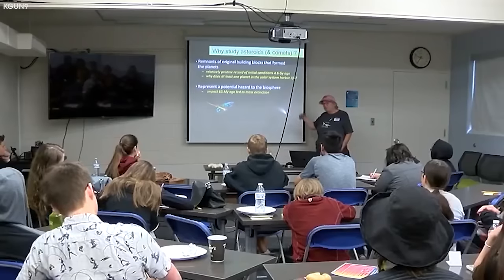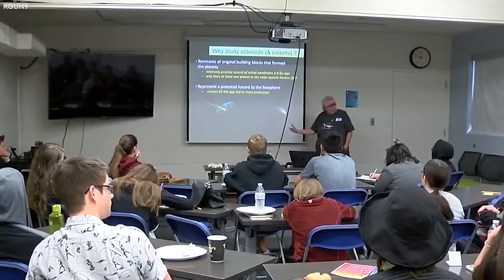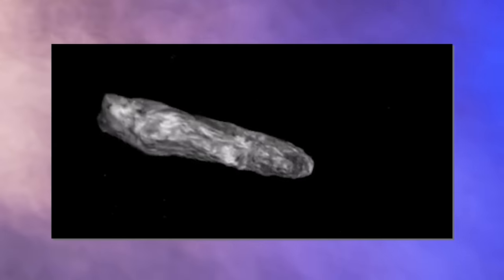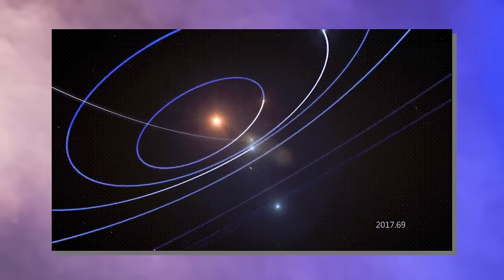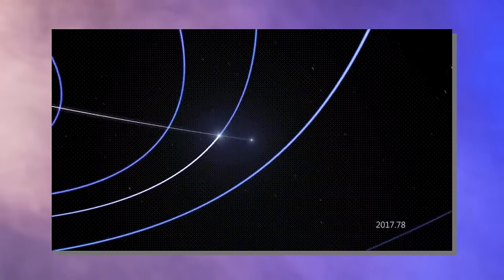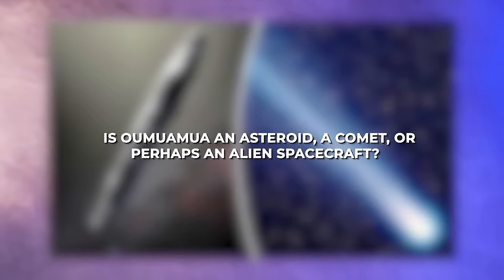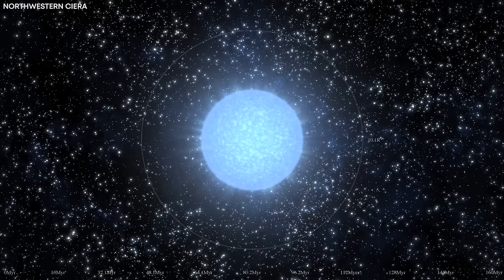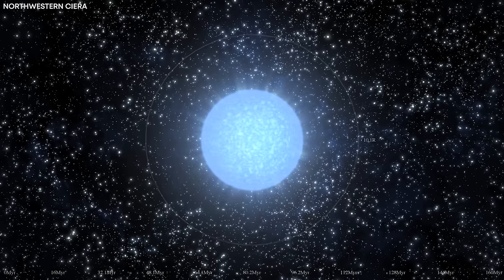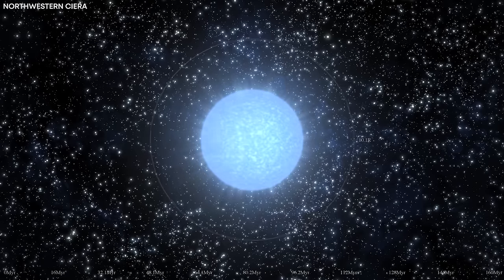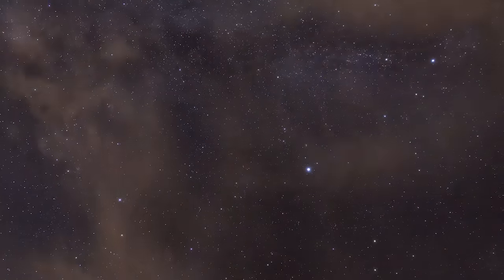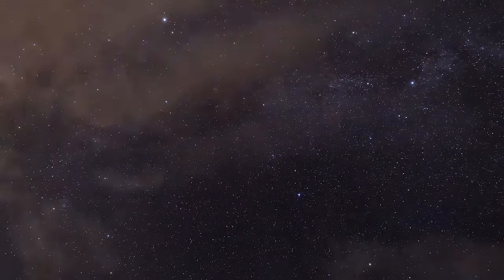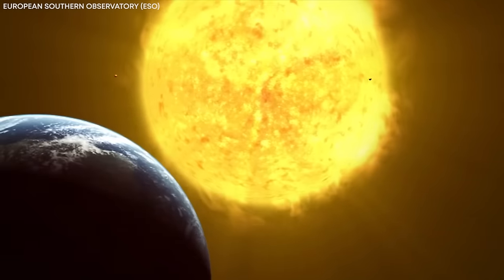Let's delve into the ongoing debate among astronomers and scientists. With some leaning towards Oumuamua being an interstellar comet, while others argue for it being an interstellar asteroid. So, is Oumuamua an asteroid, a comet, or perhaps an alien spacecraft? Let's examine the arguments regarding Oumuamua's classification as a comet or an asteroid. Comets are icy bodies made up of frozen gases, rocks, and dust that orbit the sun.